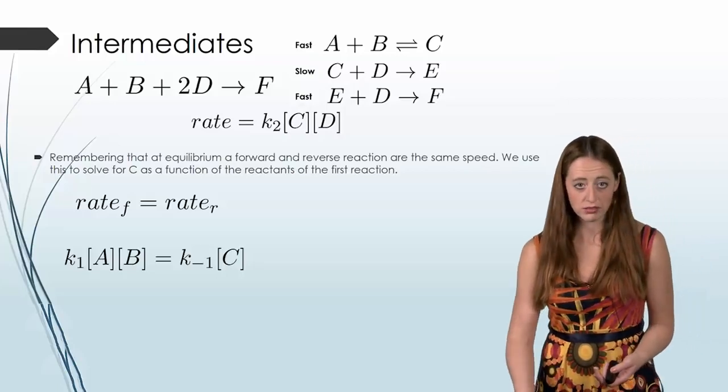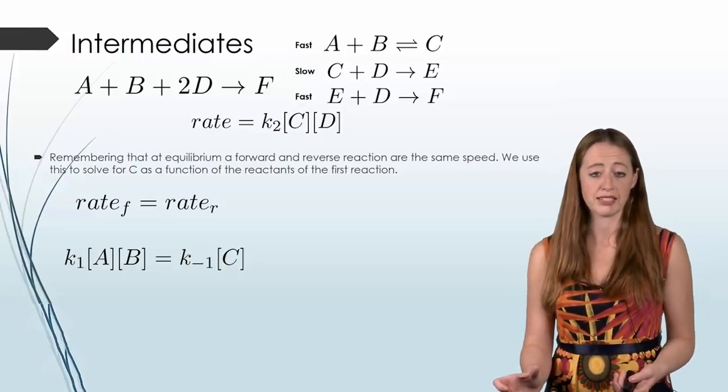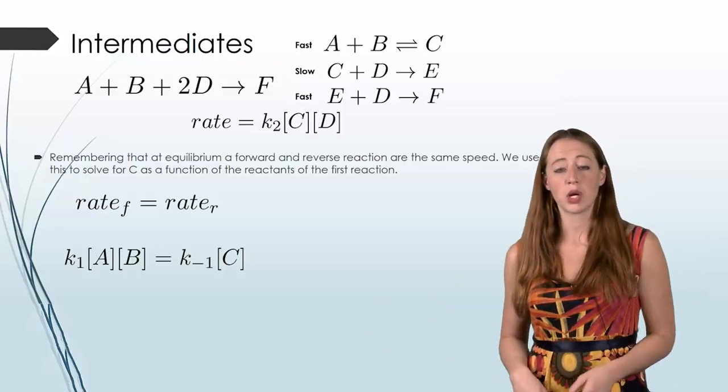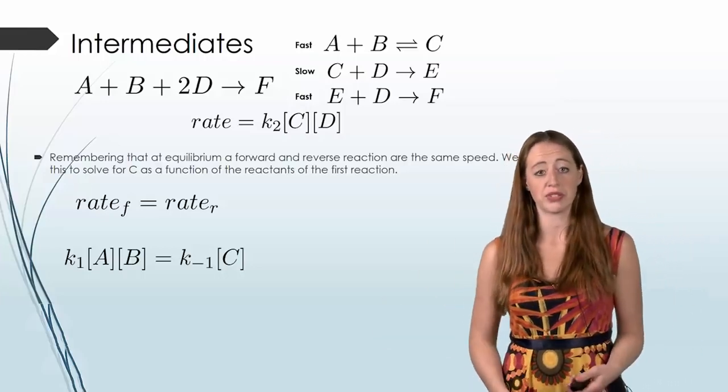Now we can do the same thing for the reverse reaction. So we're still on step one, we're still on the first step of the mechanism. But the reverse reaction now, it flip-flops. So our reactant for the reverse reaction is actually C.